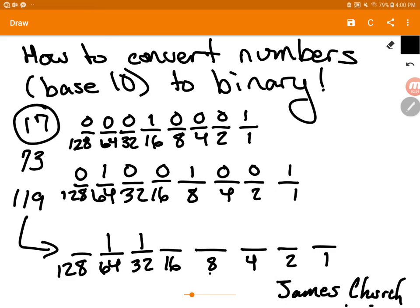55 minus 32 is 23. So I know I'm going to need 16. And then 23 minus 16 is 7. In order to get 7, I need 4, 2, and 1. Everything else becomes a 0.